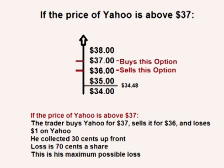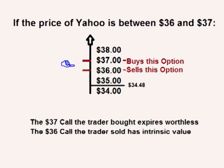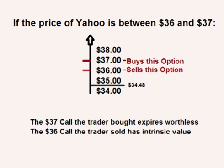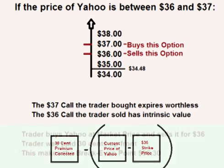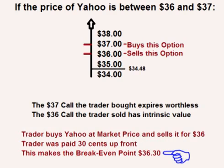This is his maximum possible loss. If the price of Yahoo is between $36 and $37, the $37 call option the trader bought expires worthless. However, the $36 call option the trader sold has between $0 and $1 worth of intrinsic value per share. The trader loses this value; however, he was paid $0.30 a share upfront, so his profit or loss is the $0.30 premium he collected upfront minus the intrinsic value of the $36 call option that he sold. The breakeven point is $36.30.